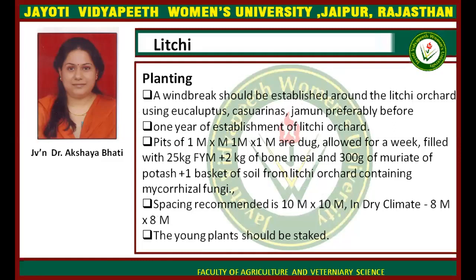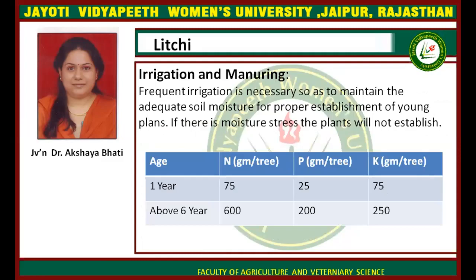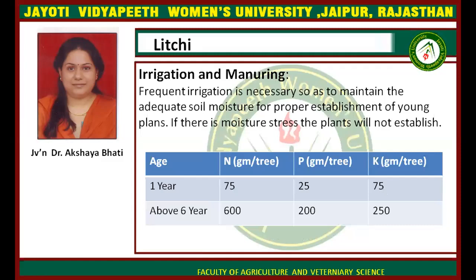Young plants should always be staked, meaning they should be tied and supported in the soil. Frequent irrigation is necessary, and the soil around the trunk always needs to maintain moisture; if moisture stress occurs, the plant will not be established. Regarding nutrients: in year one, nitrogen is 75 grams per tree, phosphorus is 25 grams, and potash is 75 grams per tree. When the plant is about 6 years old, 600 grams nitrogen, 200 grams phosphorus, and 250 grams potash should be given.